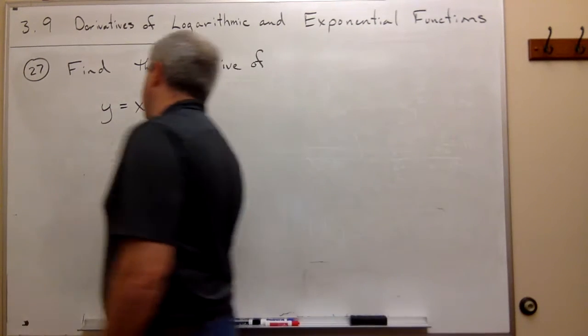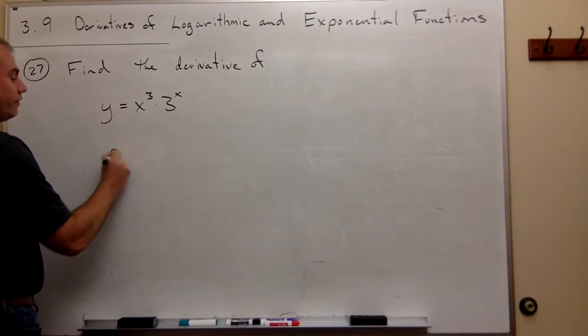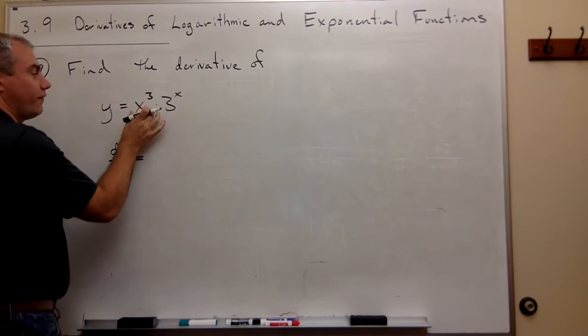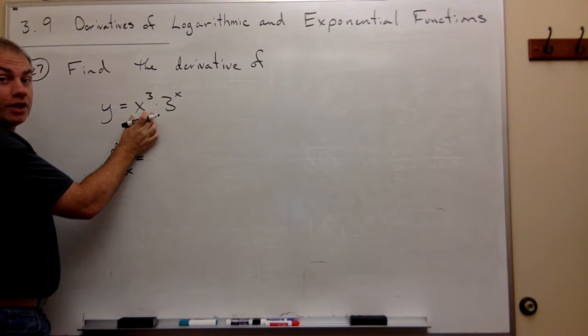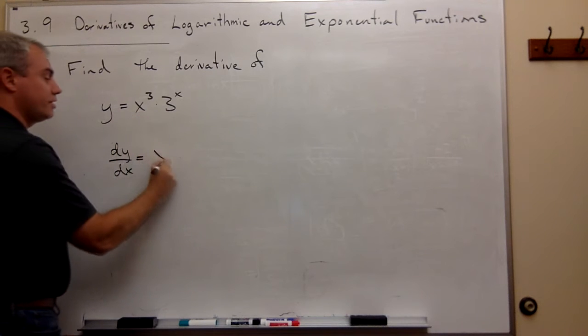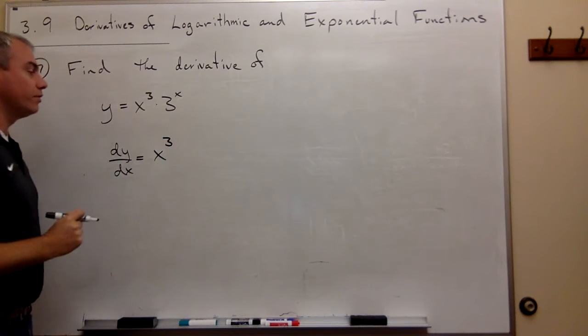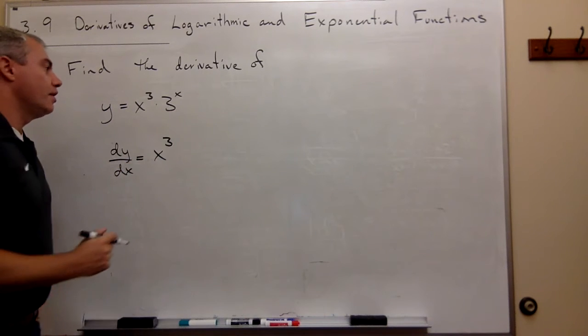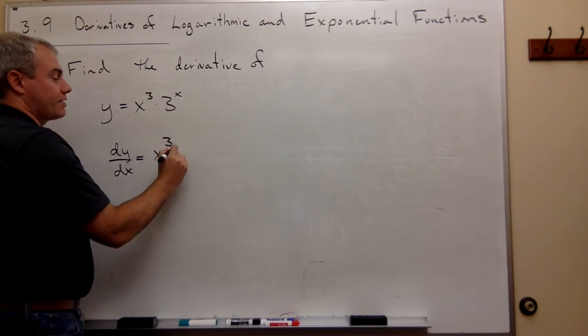So the product rule says that if I take this derivative, dy over dx, then I should take the first guy and leave him alone. So I take x cubed and just leave it alone, times the derivative of 3x. I'm sorry, 3 to the x power.